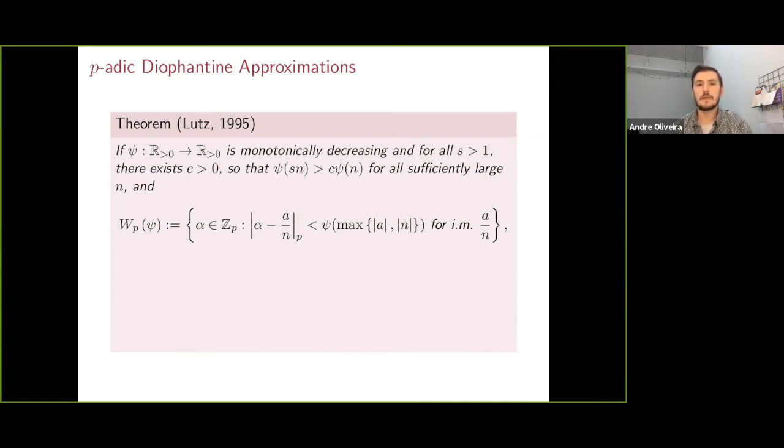What we can do now is look at the p-adic numbers, another completion of Q, and see how numbers can be approximated there.